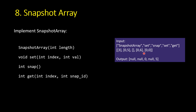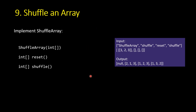The next problem is the shuffle array class — again you have to implement a class. The constructor takes an initial array, e.g., [1, 2, 3]. The shuffle function takes no arguments and returns a random permutation of the elements with equal probability for all permutations. The reset function resets the array to its original values. Calling shuffle again returns another random permutation with equal probability.